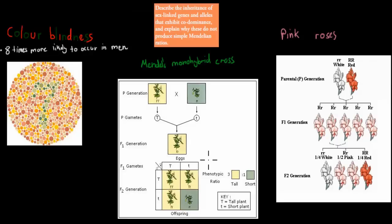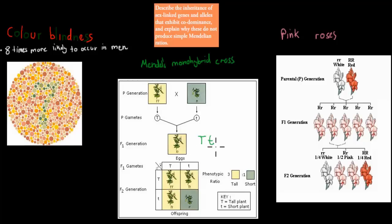If we did some revision of Mendel genetics and how that works, this was the Mendel monohybrid crossing. Here we have a homozygous tall crossing with a homozygous short plant. The result is the F1 generation, and they have both the small t and the large T, so in this case it's heterozygous tall. Now if we cross the heterozygous tall to make the F2 generation, we would have a 3-to-1 ratio of three of them being tall and one of them being short.